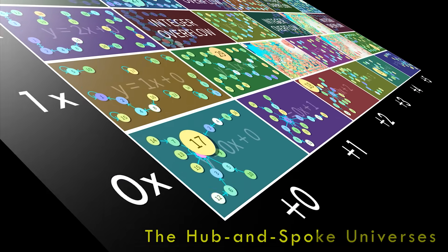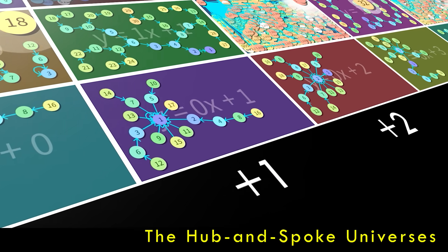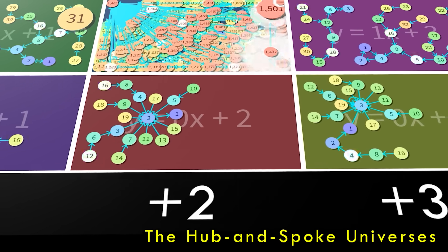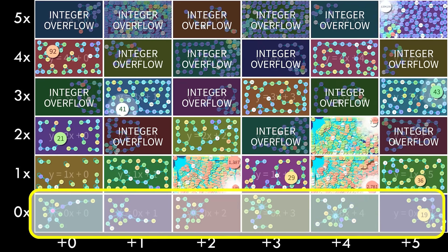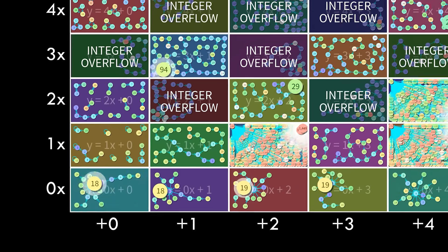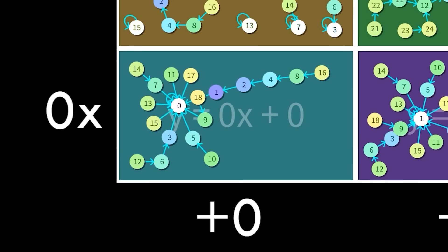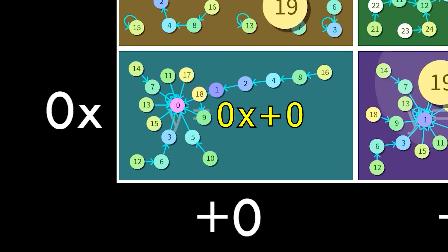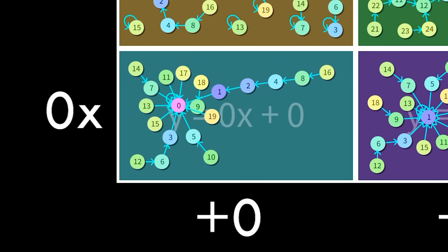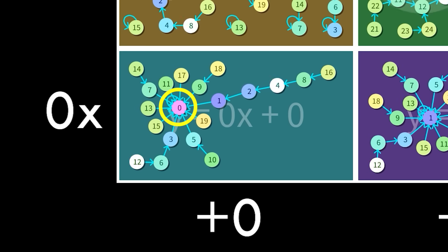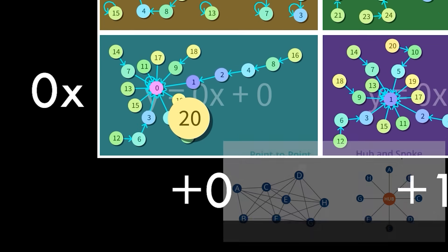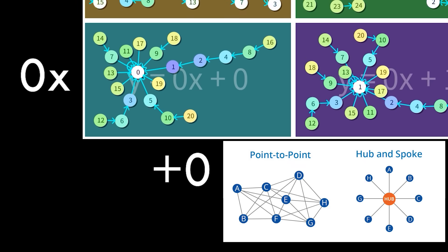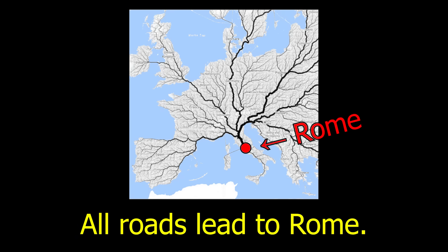First stop, the realm of the hub and spoke universes, which dominate the lower regions. Let's look at one of their constituents, the lower left universe. This rule set sends all odd numbers to 0x plus 0, they all go to 0, which is actually the only time 0 appears in this entire multiverse. That creates the hub and spoke formation, with 0 as our hub. It's like the saying that all roads lead to Rome.